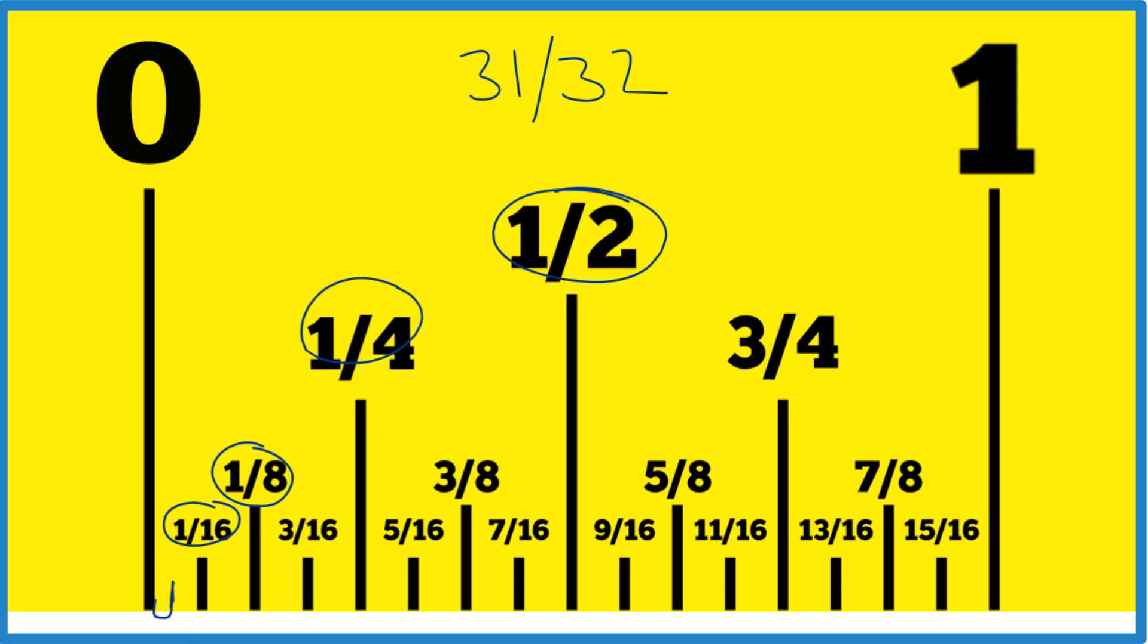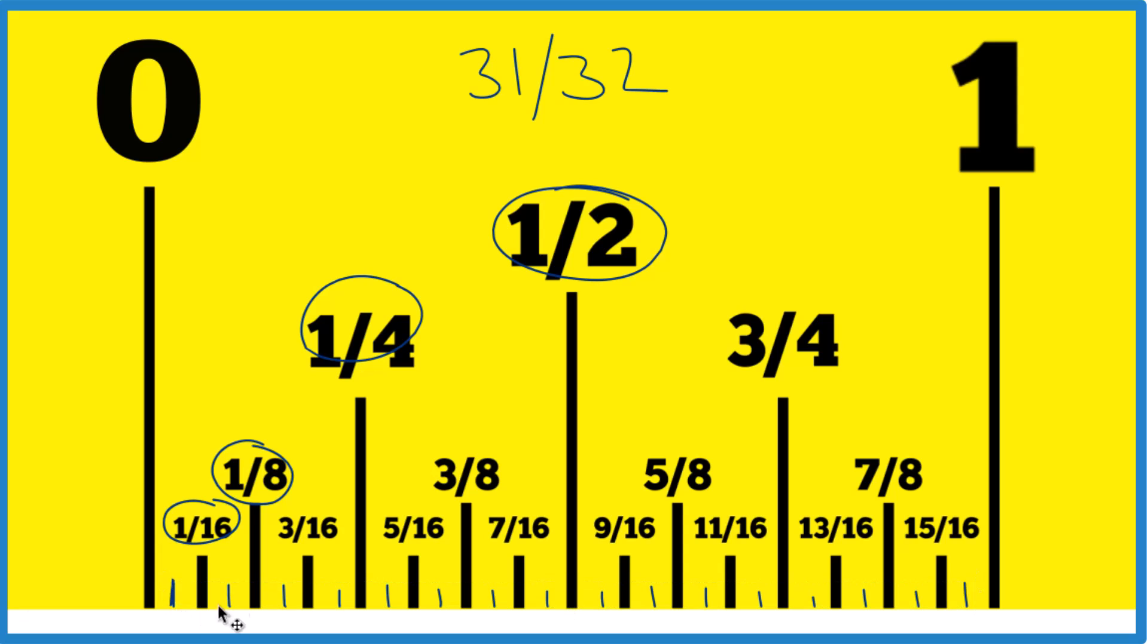So this distance right here is 1 thirty-second. And if we divide all of these up into thirty-seconds, we'll have 32 of them, and we want 31.